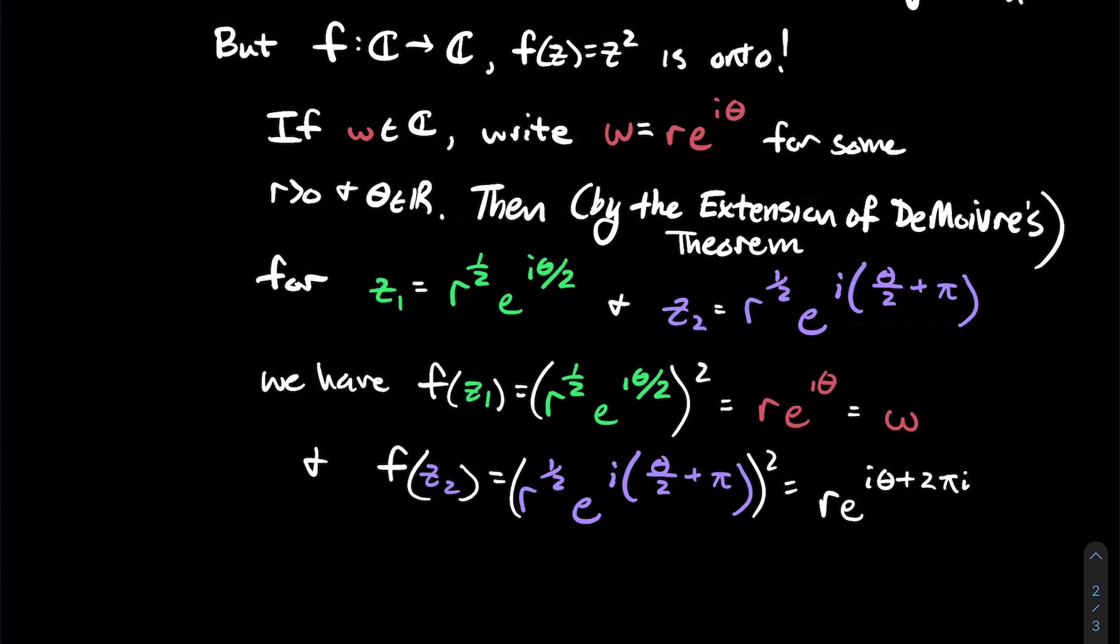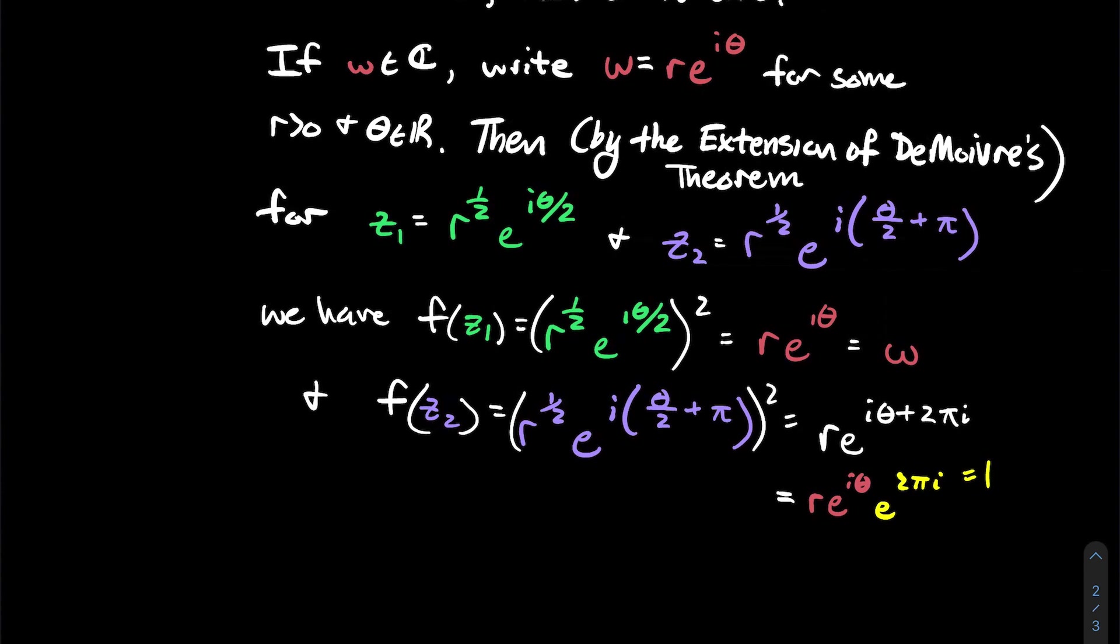Sometimes the complex analysis part, the theory and stuff can be easy. It's keeping track of all the college algebra we forgot that's hard. Anyway, now you can use your exponent rules. And you could write that as r times e to the i theta times e to the 2 pi i. We can split that up. And I know that e to the 2 pi i is just a funny way to write the complex number 1. So that's the same thing as 1.